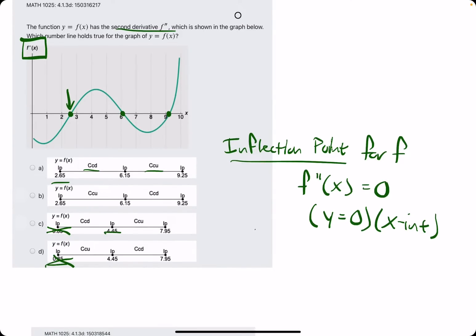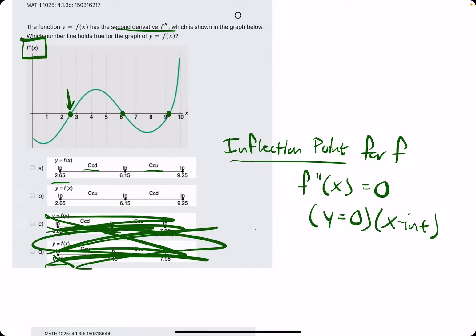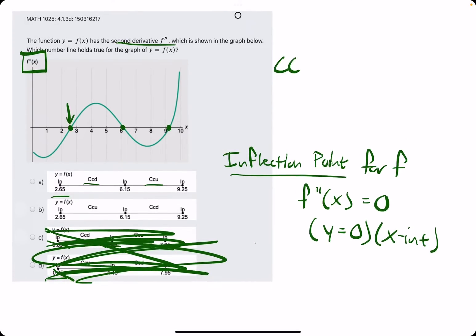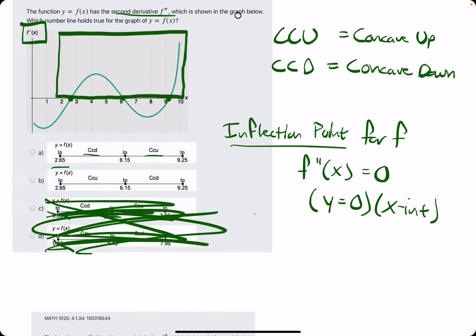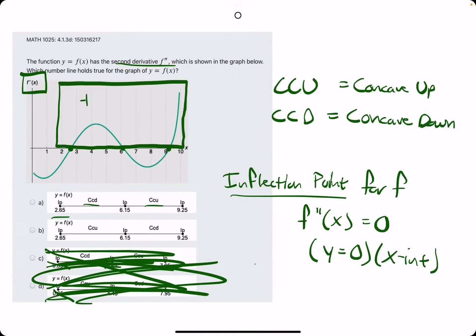Neither are 4.45 or 7.95, so we eliminate options C and D. So now CCD and CCU. Similar to when we saw the graph of f', we are focusing on where the graph is positive or above the x-axis.